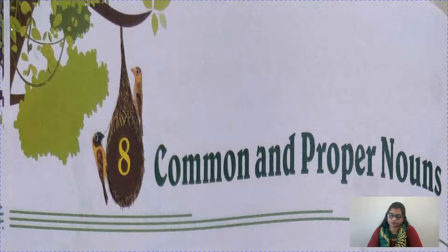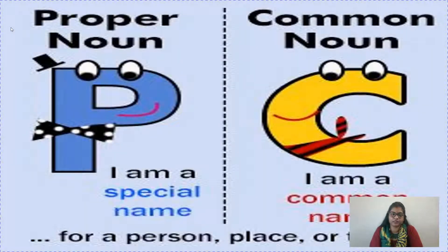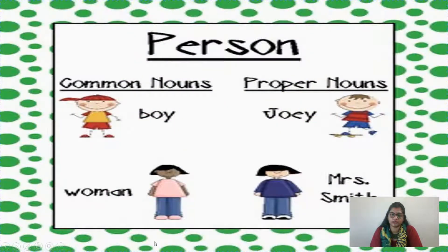So, what does common noun mean? A common noun is the common name of a person, place, animal or thing. And a proper noun is a particular name of a person, place, animal or thing. P for proper noun — it is a special name. C for common noun — it is a common name. These are special and common names for persons, places or things.